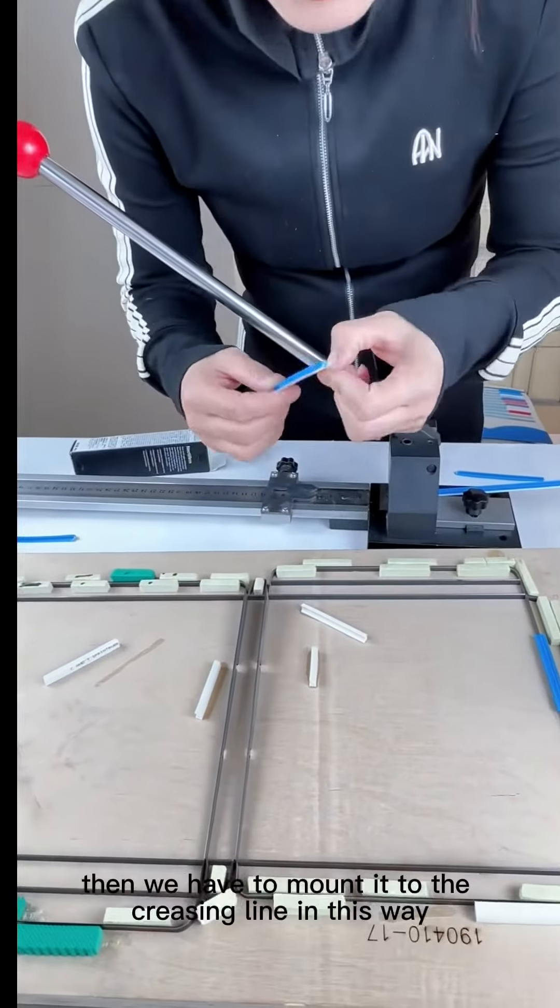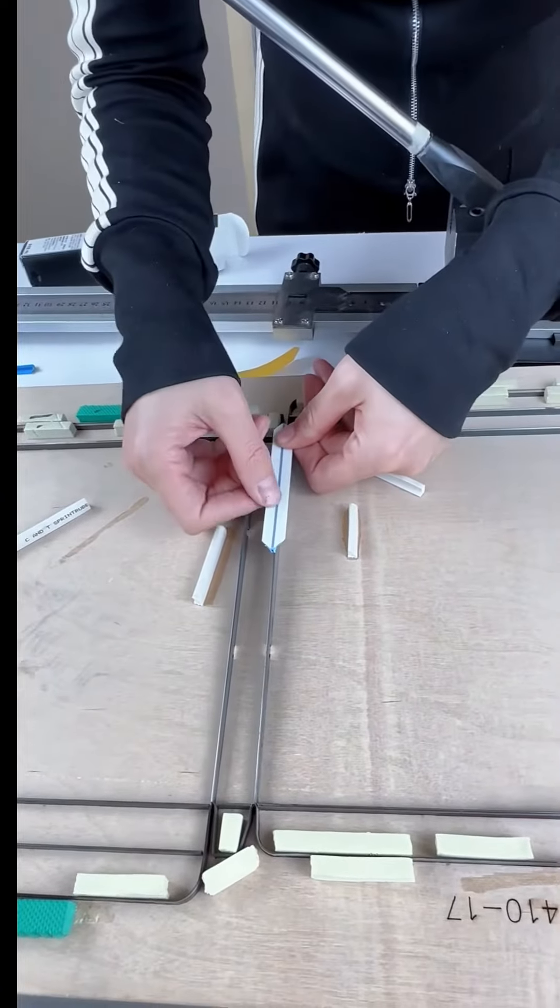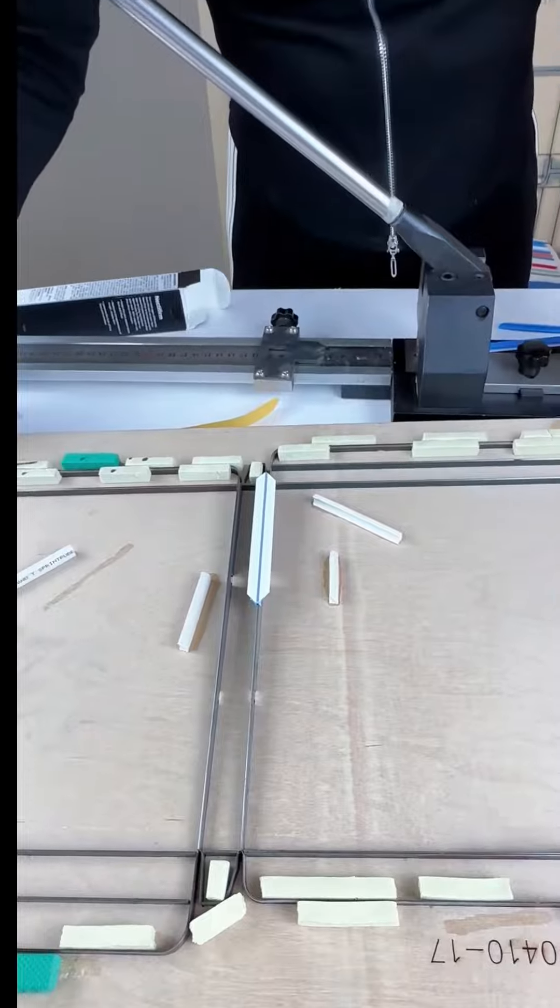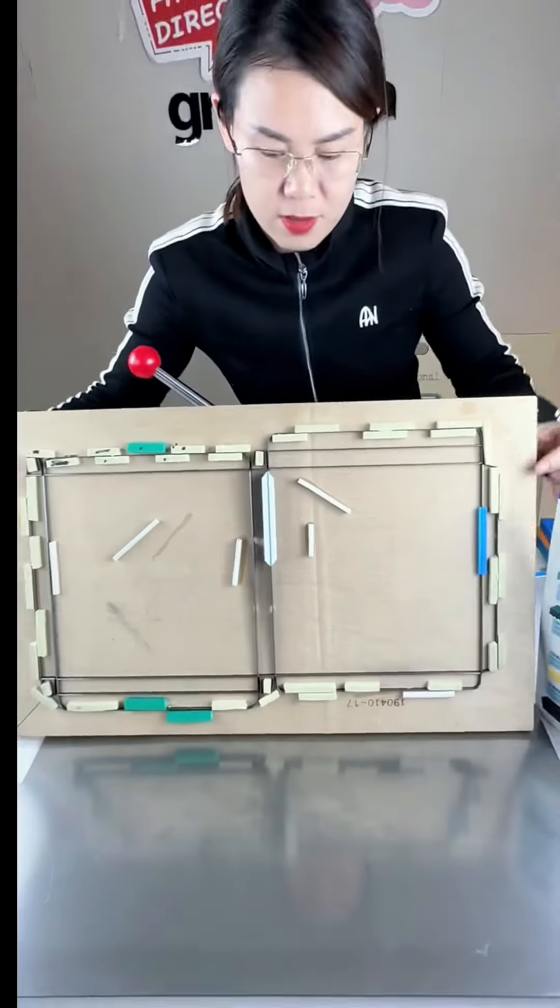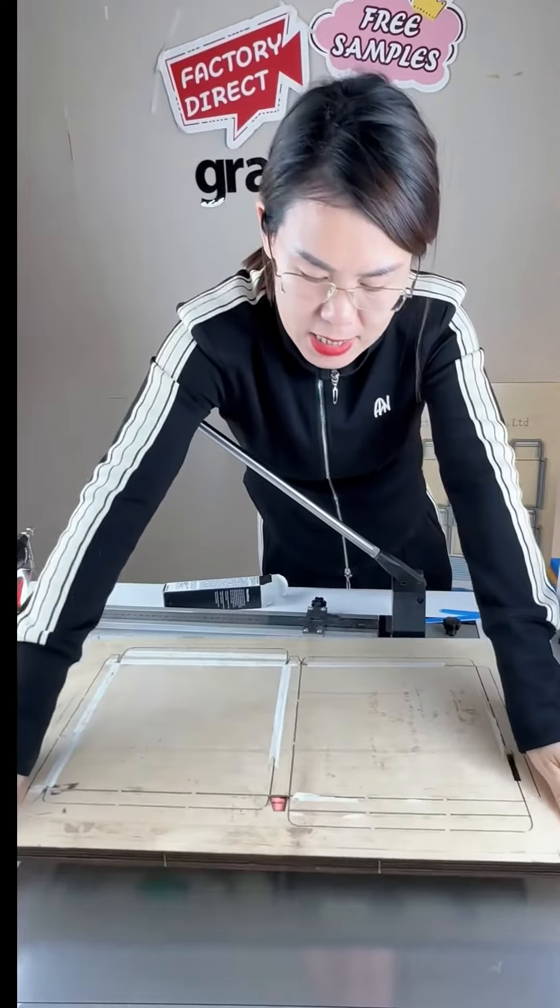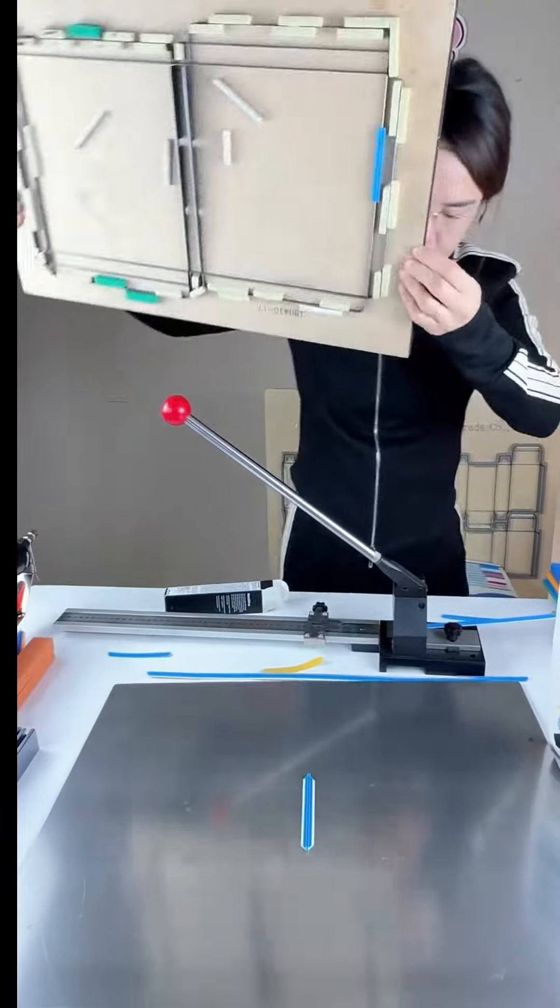Then we have to mount it to the crazy line in this way. Then open the machine. The crazy matrix will easily stick to the steel plate like this.